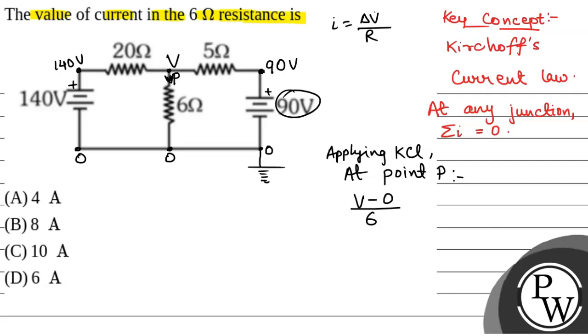So, in this wire, there will be a current flowing, that is, delta V minus 0 by R is 6. And, in this wire, it will be V minus 90 by 5. So, plus V minus 90 by 5.